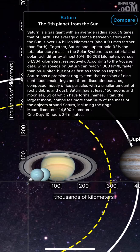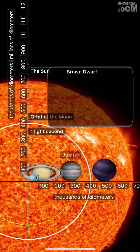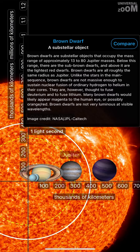Saturn, the sixth planet from the Sun. Jupiter, the fifth planet from the Sun. Jupiter is the largest planet in the Solar System. Brown Dwarf, a substellar object.